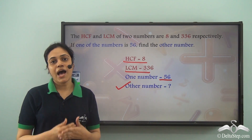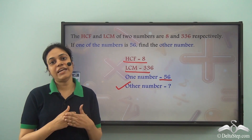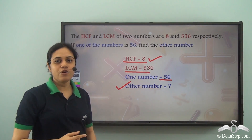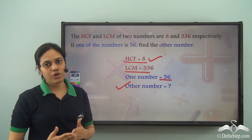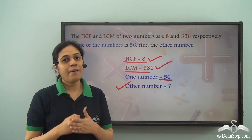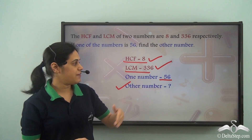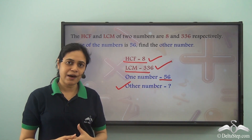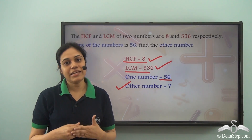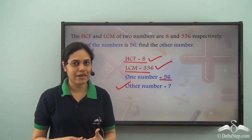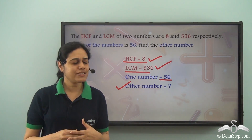Now how do we do that? I know that if I am given two numbers, I can find their HCF. Also, if I am given two numbers, I can find their LCM. But if I am given HCF and LCM, how do I find the numbers? So, is there any relation between HCF, LCM and the numbers? Let us see.